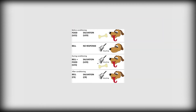The unconditioned stimulus is the object or event that originally produces the reflexive natural response. The response to this is called the unconditioned response. The neutral stimulus is a new stimulus that does not produce a response. Once the neutral stimulus has become associated with the unconditioned stimulus, it becomes a conditioned stimulus. The conditioned response is the response to the conditioned stimulus.